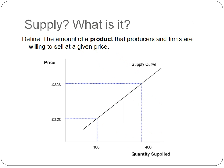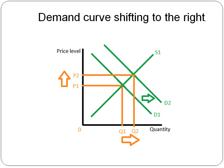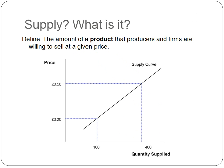Supply — what is it? The definition for supply is the amount of a product that producers and firms are willing to sell at a given price level. On the diagram — at 20p there are 100 units being supplied, and at 50p per unit there are 400 units being supplied.